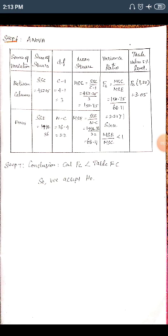Now we construct the ANOVA table with columns: Source of Variation, Sum of Squares, Degrees of Freedom, Mean Square, Variance Ratio, and Table Value at 5% significance. For 'Between Columns': SSC = 452.25, degrees of freedom = c − 1 = 4 − 1 = 3, and Mean Square of Column (MSC) = SSC / df = 452.25 / 3 = 150.75.